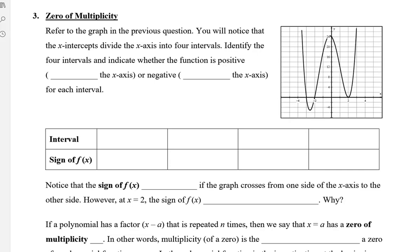Refer to the graph to the right, which is from a previous question in a previous video. You will notice that the x-intercepts negative 3, negative 2, and 2 divide the x-axis into four intervals. These four intervals can be written as positive, meaning they are above the x-axis, or negative, below the x-axis. From negative 3 and to the left, all of this is going to be positive as the graph goes up. Negative 2 to positive 2, the graph is also positive. And from 2 on to the right, this is also positive.